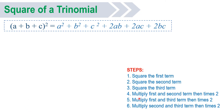It's quite long, but it is actually easy to remember because they are just repeating. First, square the first term. Then the second term. Then the third term. Fourth, multiply the first and second term, then times 2. Fifth, multiply the first and third term, then times 2. And the last one, multiply the second and third term, then times 2.